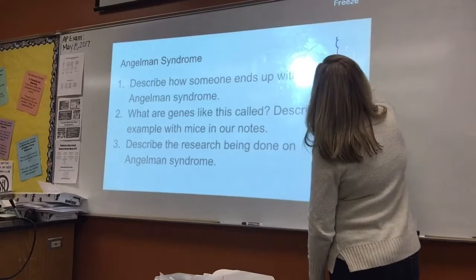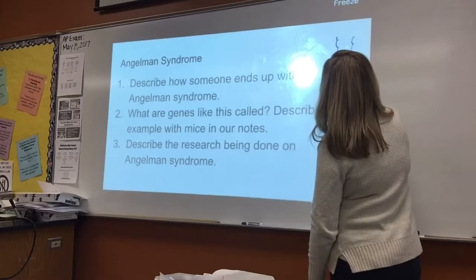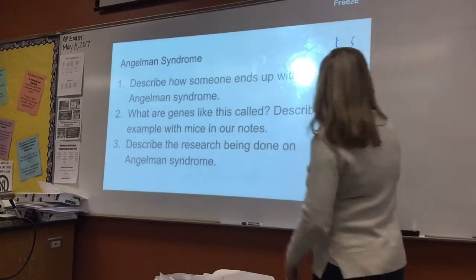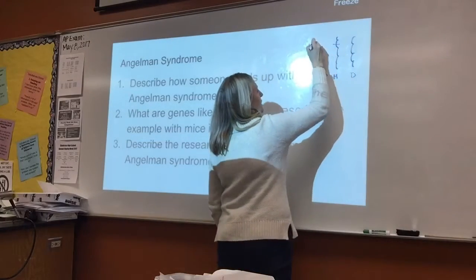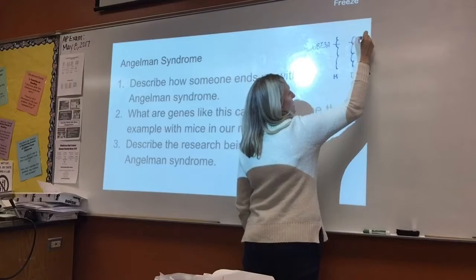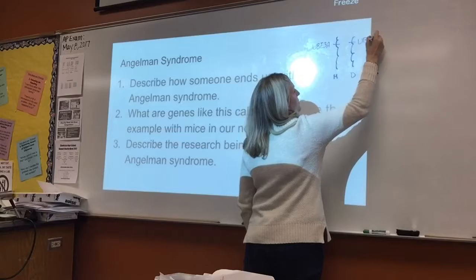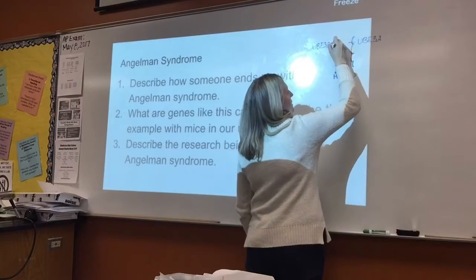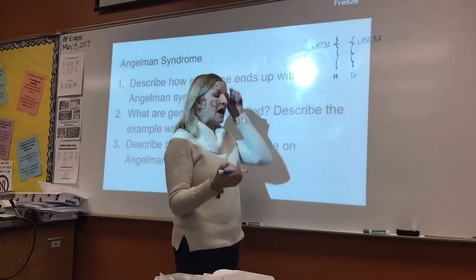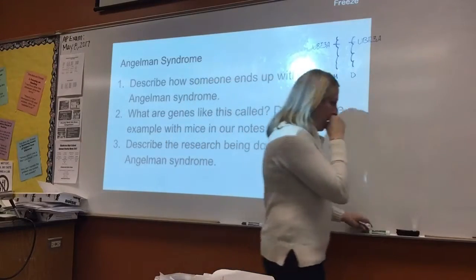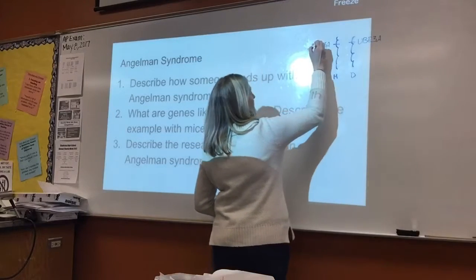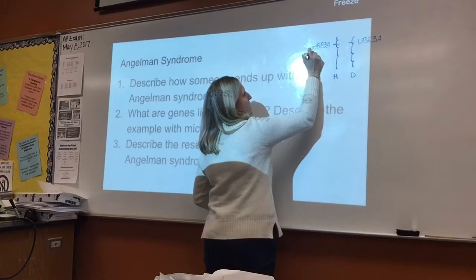So here are your two chromosomes. You get one from mom and one from dad. So you have this gene — they call it UBE3A. There's a gene, a section of the DNA that codes for making this protein. And as Madeline said, in order to get this, mom's copy of this gene is mutated.